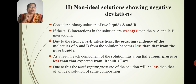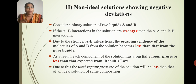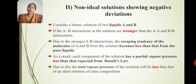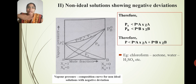Now, for the non-ideal solution showing negative deviation, the escaping tendency of the molecules becomes less than that from the pure liquids. The escaping tendency is less than that from Raoult's law, so the partial vapor pressure is less than that predicted by Raoult's law. Automatically, total vapor pressure is also less than Raoult's law. Positive deviation is in the upward direction and negative deviation is in the downward direction.